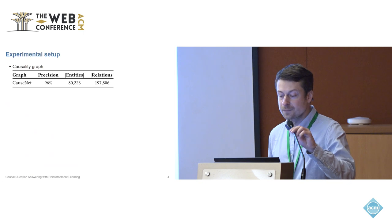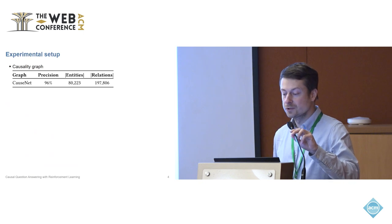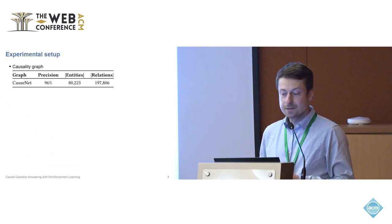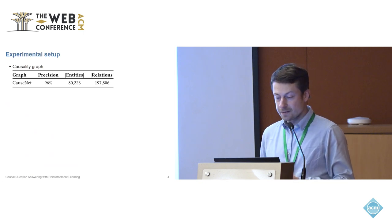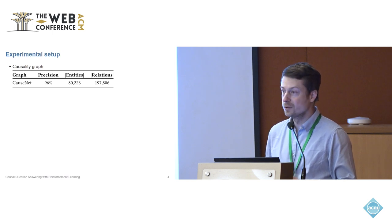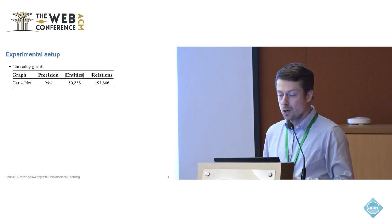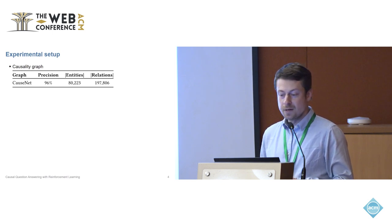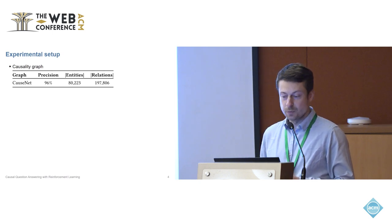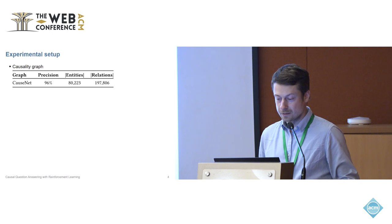In our experiments, we use a large-scale causality graph called COSNET. This graph contains about 80,000 entities and about 200,000 relations. It was originally extracted from a large web corpus, and a manual study found that about 96% of its causal relations are correct.